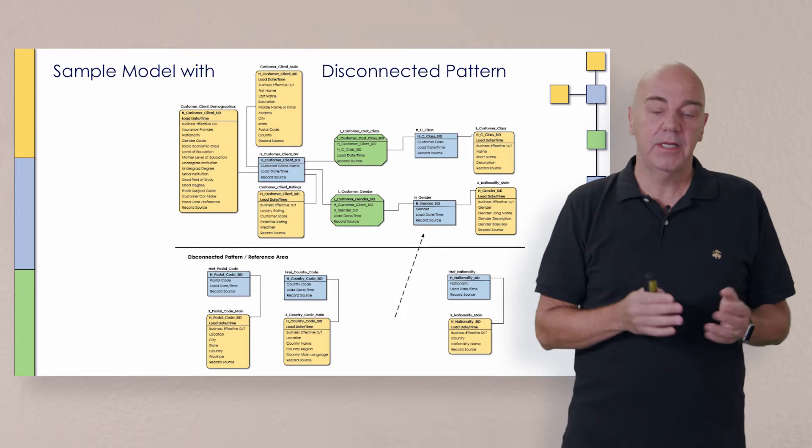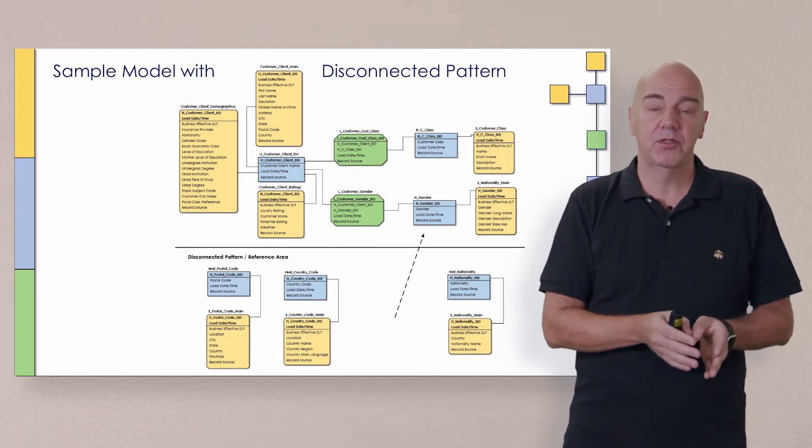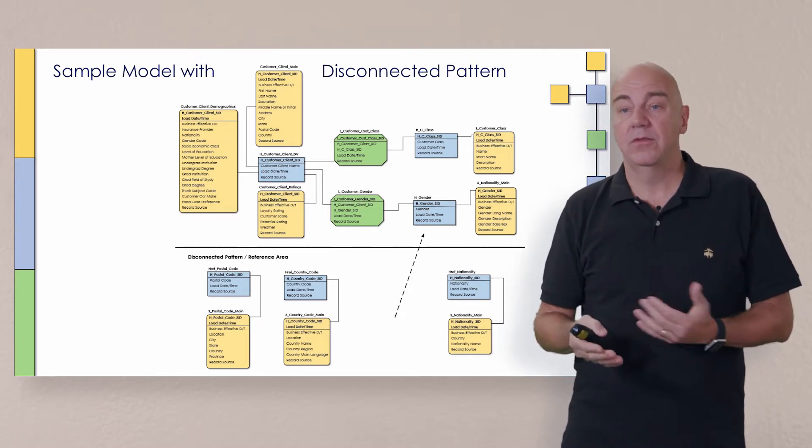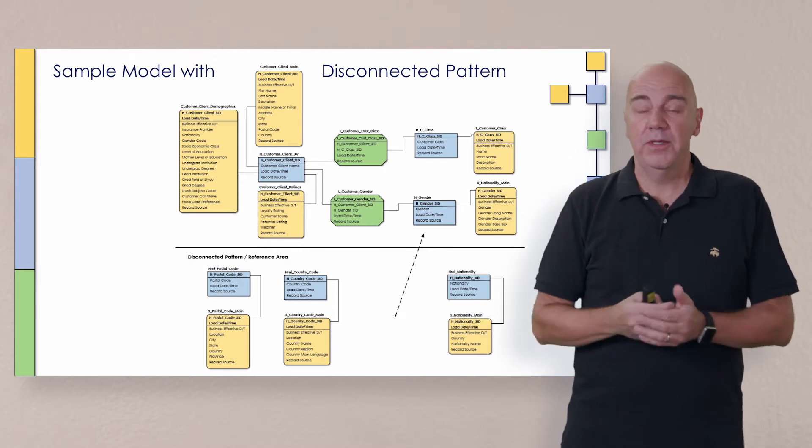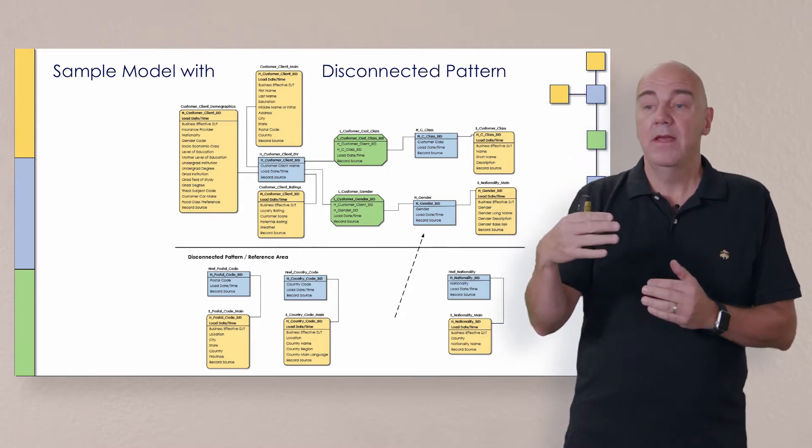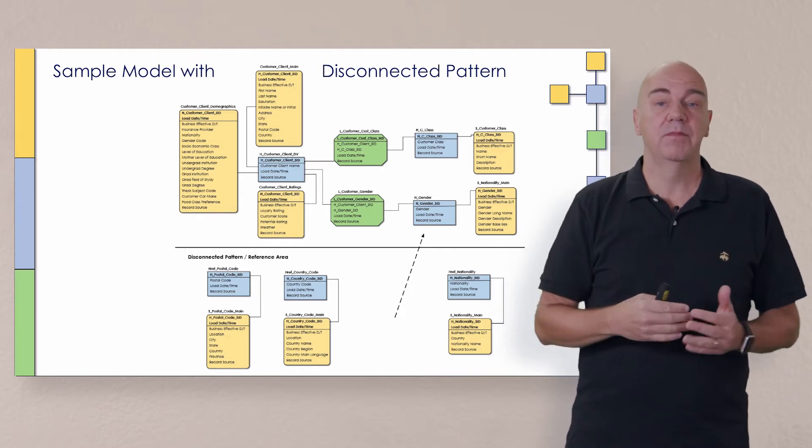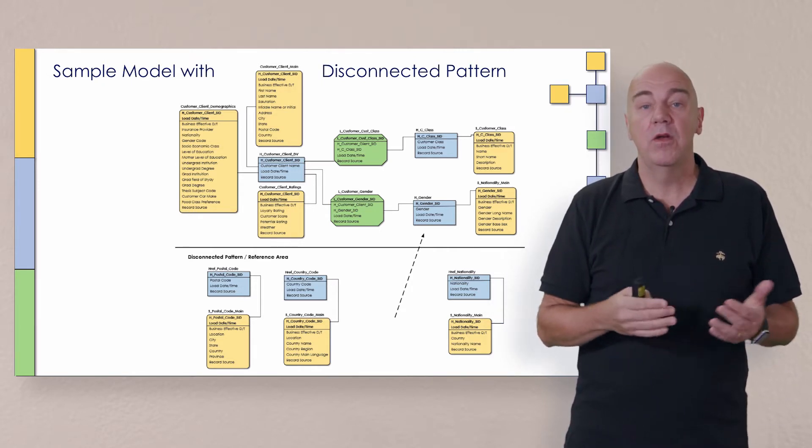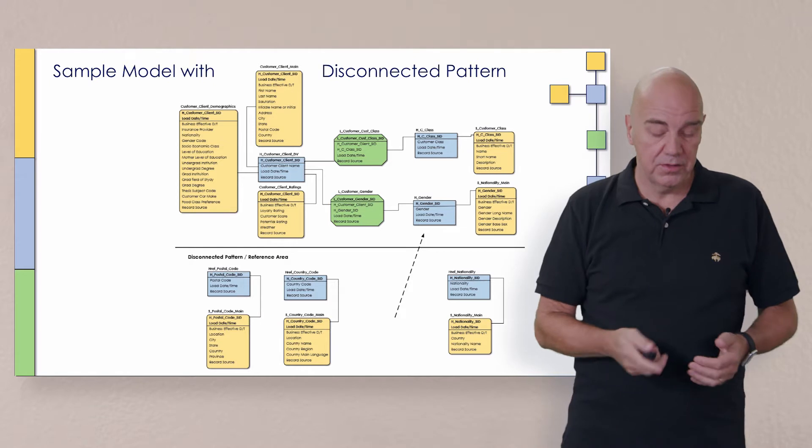And that's one of the reasons why it's important to keep your disconnected pattern table structures also vaulted or in an ensemble form, because that way you can promote them if that business case comes up. And you can also look at demoting some later if you don't need to have them wired into the core model. So those are the two.